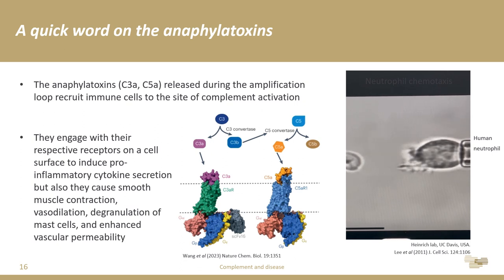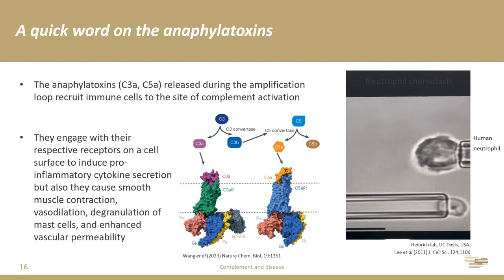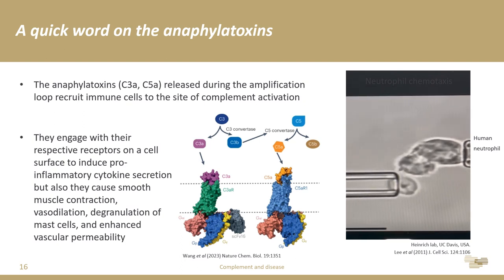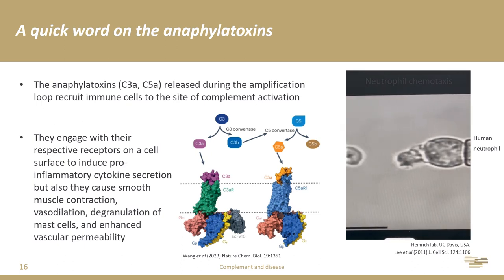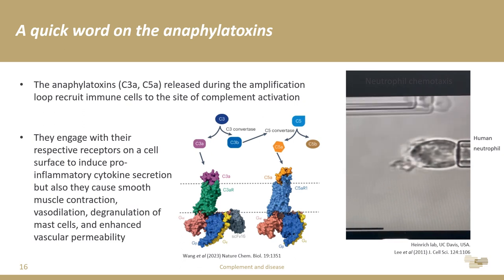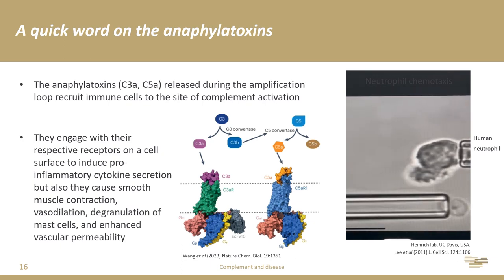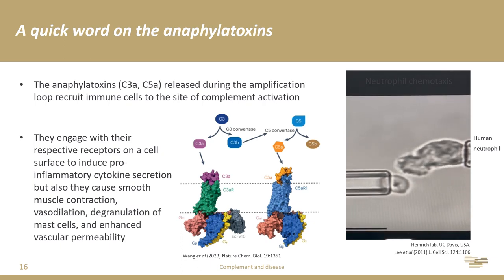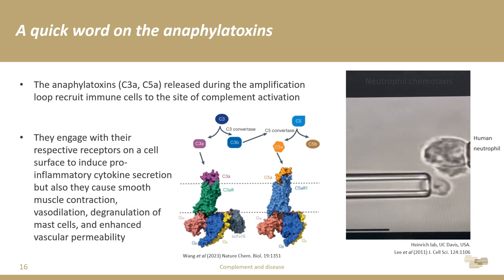The anaphylatoxins C3A and C5A recruit circulating immune cells to sites of complement overactivation. In the video shown here, neutrophil chemotaxis toward a zymogen is demonstrated — work done by the Heinrich lab at UC Davis — where the major signal is C5A. Not only do these anaphylatoxins recruit immune cells, but when they engage receptors on these cells, they cause inflammatory cytokine secretion. In other cell types they also cause smooth muscle contraction, vasodilation, degranulation of mast cells, and enhanced vascular permeability.